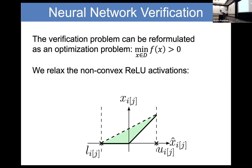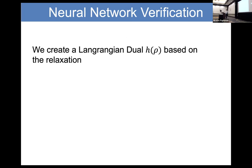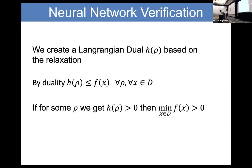Once we've branched on a ReLU, we still need to solve the subproblem. A good way is to use duality: any value we get for the dual is a lower bound for any possible primal output. So whatever dual variables we use, we have a lower bound. If we find a set of dual variables that gives a positive dual value, we know the primal minimum is greater than zero — and that's all we care about: whether it's robust or not.